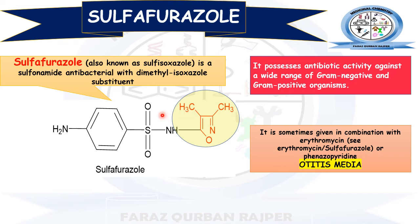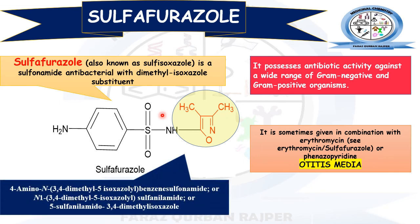Sulphafurazole has antibiotic activity against a wide range of gram-negative and gram-positive bacteria, meaning it has an extended spectrum of activity in comparison to other derivatives. It is sometimes given in combination with other drugs, such as erythromycin — a combined formulation of erythromycin and Sulphafurazole — or with phenazopyridine. It is useful for treating otitis media. The IUPAC name for Sulphafurazole is 4-amino-N-(3,4-dimethyl-5-isoxazolyl)-benzenesulfonamide.